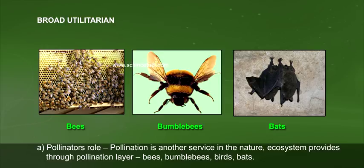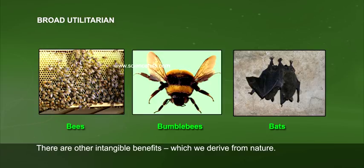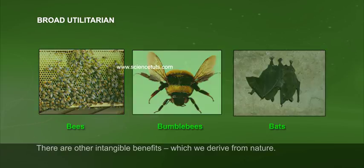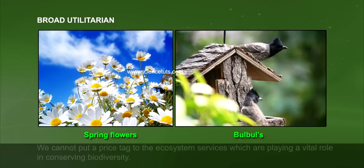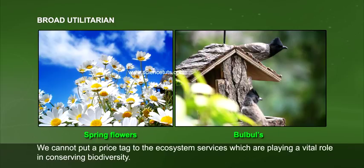Pollinator's role: Pollination is another service that the nature ecosystem provides through pollinators like bees, bumblebees, birds, and bats. There are other intangible benefits which we derive from nature — for example, the aesthetic pleasures of walking through thick woods, watching spring flowers in full bloom, waking up to a bulbul's song in the morning. We can't put a price tag on the ecosystem services which are playing a vital role in conserving biodiversity.